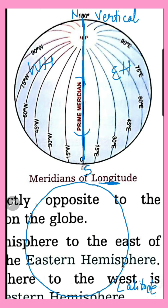For latitude, the lines are like sleeping lines — they run from East to West. These lines also divide the earth into two halves: the upper portion is the Northern Hemisphere and the lower portion is the Southern Hemisphere. The center line of longitude is called the Prime Meridian, and the center line of latitude is called the Equator.